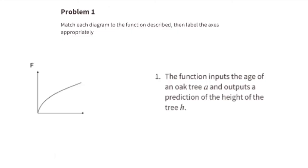Diagram F matches function 1. The function inputs the age of an oak tree, A, and outputs a prediction of the height of the tree, H. The horizontal axis, or x-axis, represents age, and the vertical axis, or y-axis, represents height. This graph shows that in the first few years the height of the tree increased pretty rapidly, and then as the years progressed, the height of the tree increased more slowly.